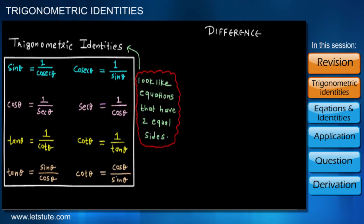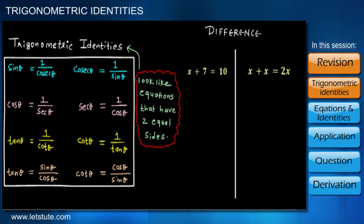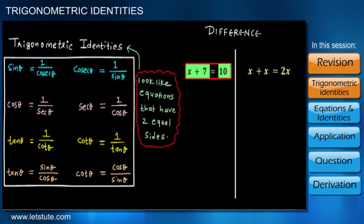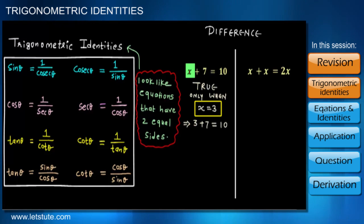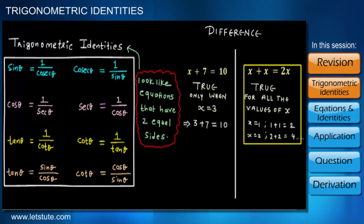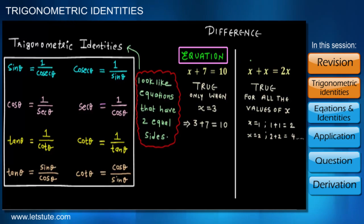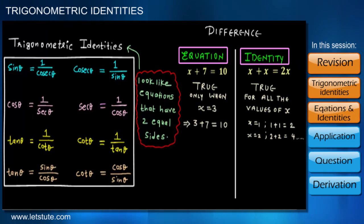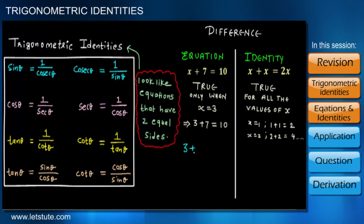Identities look like equations that have two equal sides, so please remember there is a difference between an equation and an identity. To understand the difference, look at these two expressions. The first expression has both sides equal only when the value of X is 3, whereas the other expression is true for any value of X. So the first expression is an equation and the other is an identity.